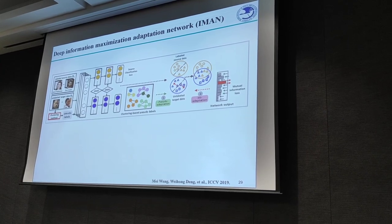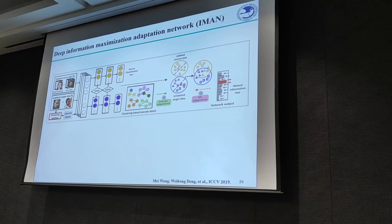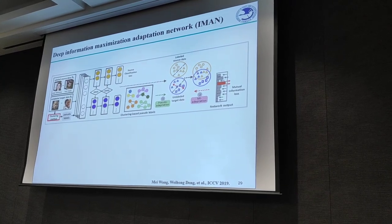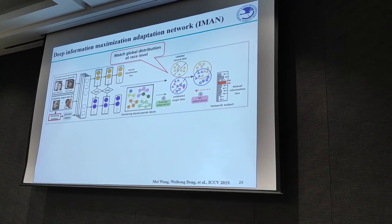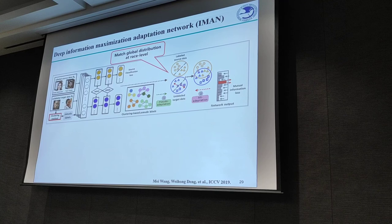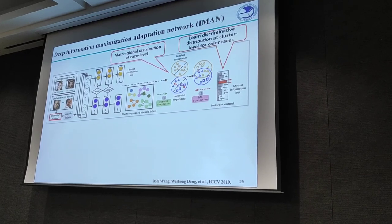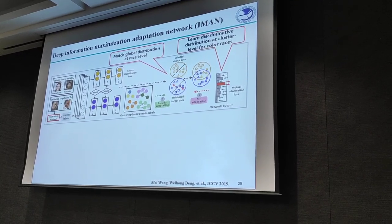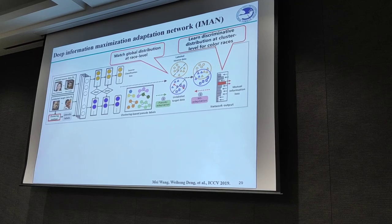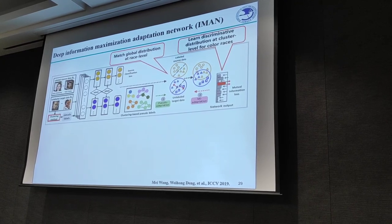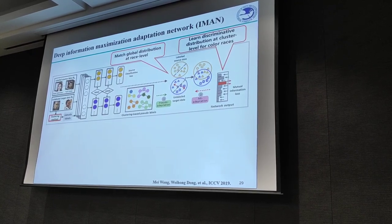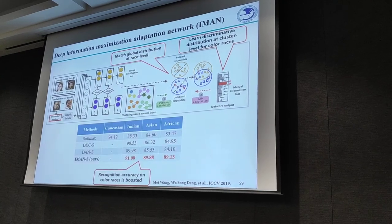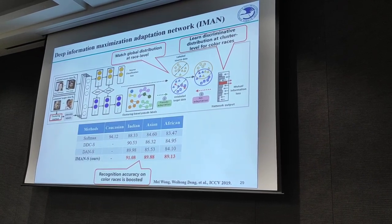Removing this bias is an urgent problem. Transfer learning is widely considered one of the promising solutions. We developed a new method that bridges the gap between feature distributions of different races, using a mutual information criterion to enlarge the inter-class margin for darker-skin faces, effectively reducing racial bias.